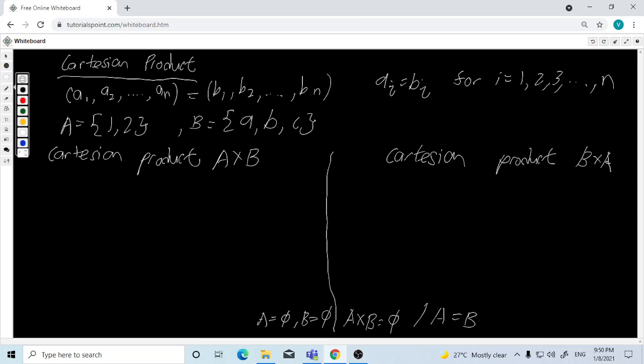So that, (1,a), (1,b), (1,c) - sorry, use the wrong symbol - (1,c), (2,a), (2,b), and (2,c).